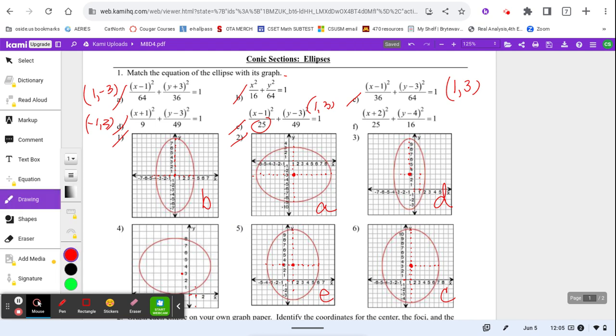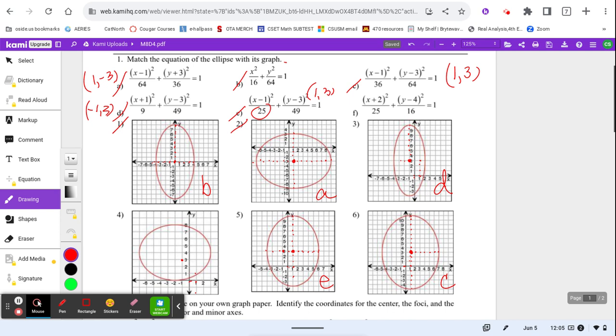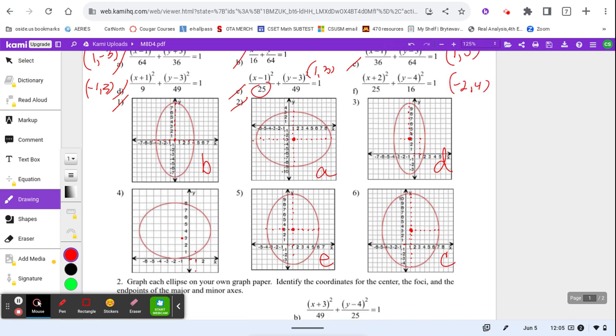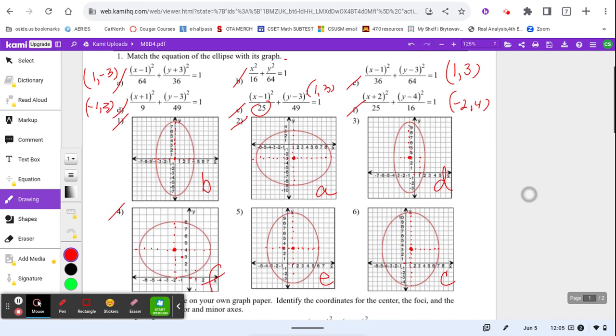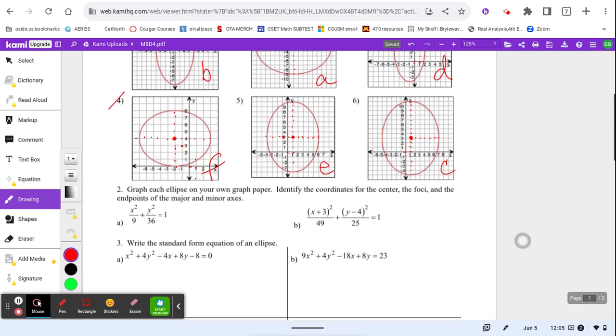Finally, by process of elimination, that leaves me F at negative 2, 4. Let's go check our last graph. Negative 1, 2, 1, 2, 3, 4, yep, that looks like the center. And then distance of 1, 2, 3, 4, 5. 1, 2, 3, 4, 5. And distance of 4 up and down. That's it, so this is my F. And we are done. How did you do on those? Were you able to match those?